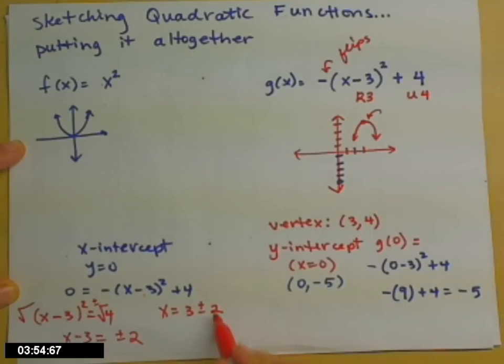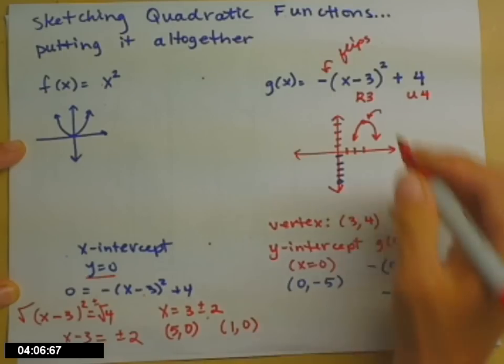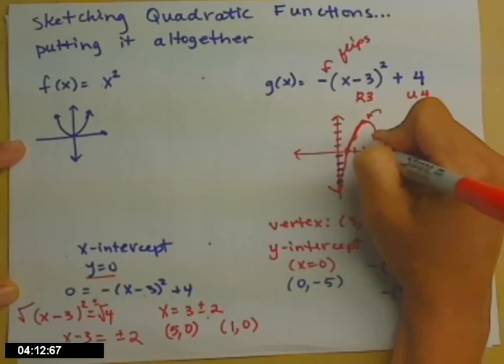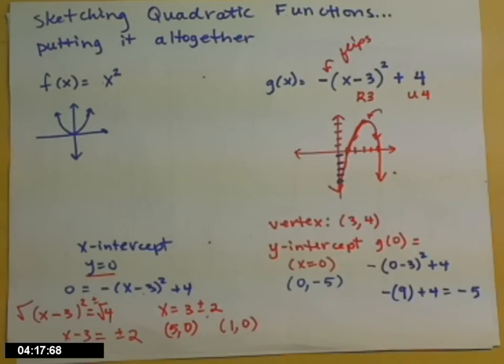So your x-intercepts, there's 1 at 3 plus 2, 5. Remember the y-partner is 0. And 1 at x, 3 minus 2. So 3 minus 2 is 1. Again, our y-partner is 0. So it's going to go through that point there. And then, 1, 2, 3, 4, 5. And it'll go through that point there.